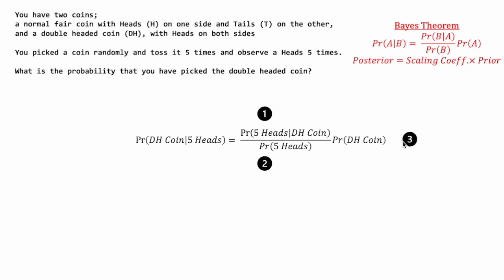Now let's address the easy parts — the easy segments of this equation. Segment three: the probability of getting a double-headed coin. This is just our prior, and because we only have two coins — a normal fair coin and a double-headed coin — the probability of getting a double-headed coin is just one over two.